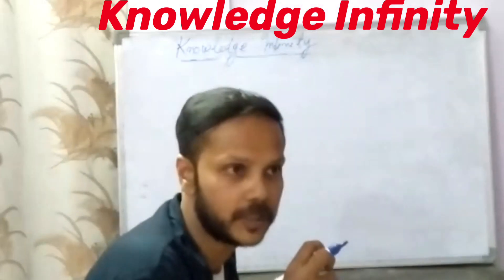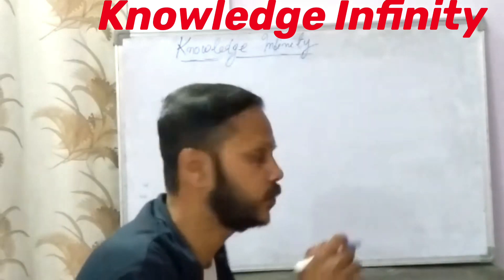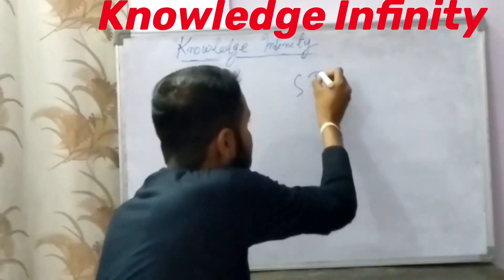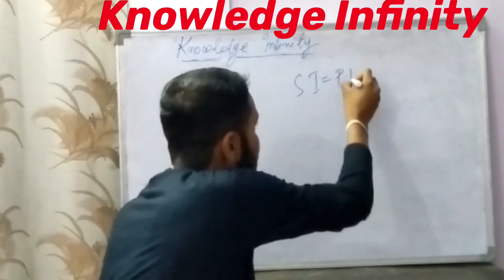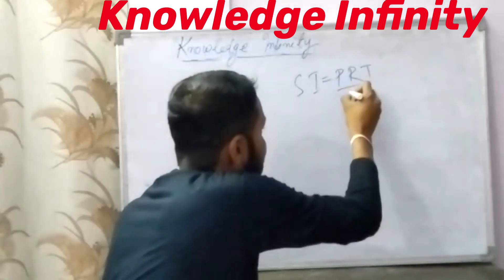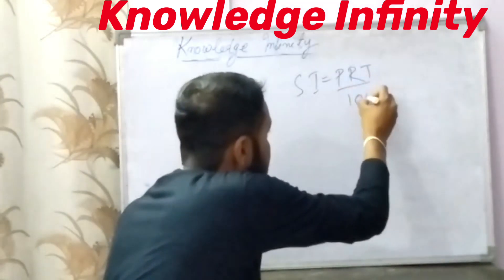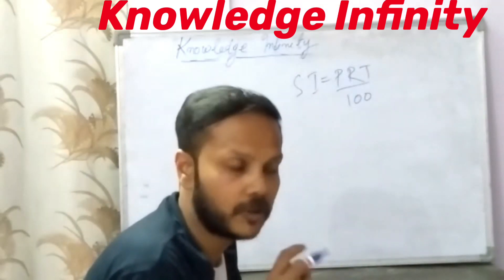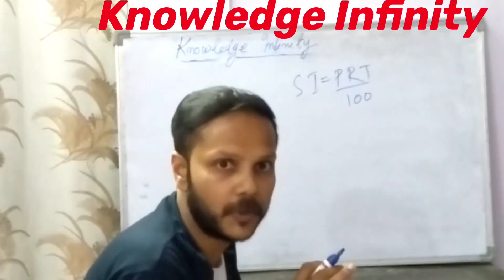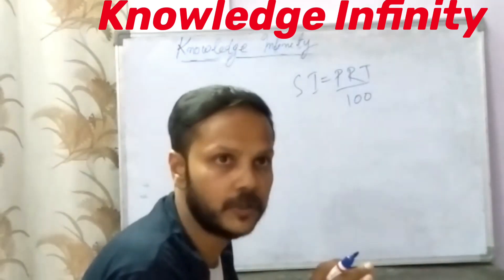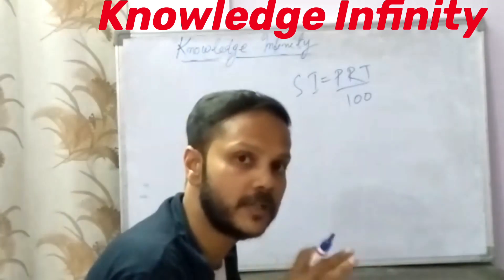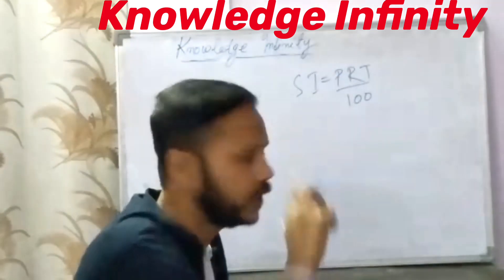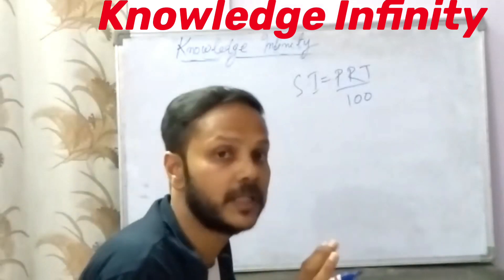Today also I'm going to give a short descriptive video on what is the difference between simple interest and compound interest. Up to class 7th, students are familiar with the simple interest formula — that is, simple interest is equal to principal into rate into time upon 100. If you are going to class 8th and not yet knowing about compound interest, take this video as an introduction to compound interest.